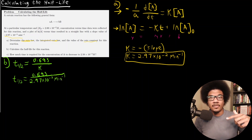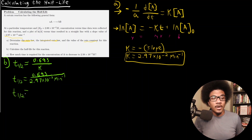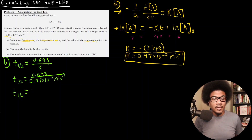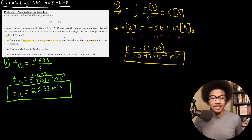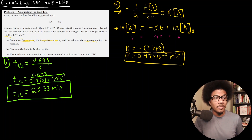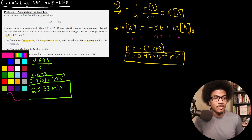Since inverse minutes is in the denominator, it comes up to the numerator once you perform the division. The result is 23.33 minutes. That is how long it takes for this first-order reaction to reach half of its initial concentration — the half-life of this reaction.